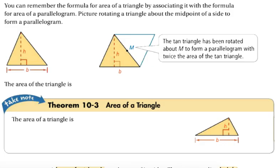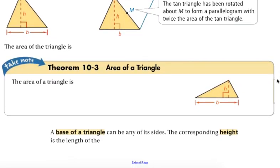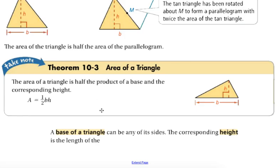We're going to start talking about the areas of triangles. You can remember the formula for the area of a triangle by associating it with the formula for the area of a parallelogram. Picture rotating a triangle about a midpoint of a side to form a parallelogram. Any triangle reflected about a side will form a parallelogram. We know the area of the parallelogram is base times height. So if we have two triangles in our parallelogram, the area of the triangle is just half the product of the base and the height.